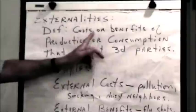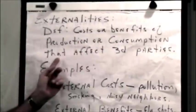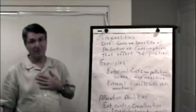Externalities, the definition is, they are costs or benefits of production or consumption that affect third parties who don't want to be affected, who are not part of the deal.